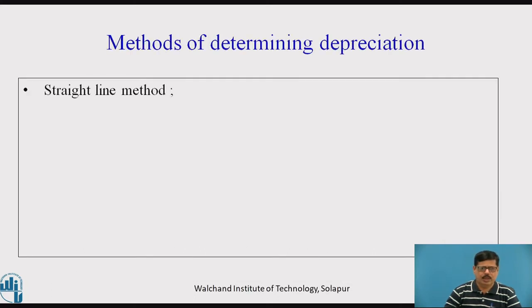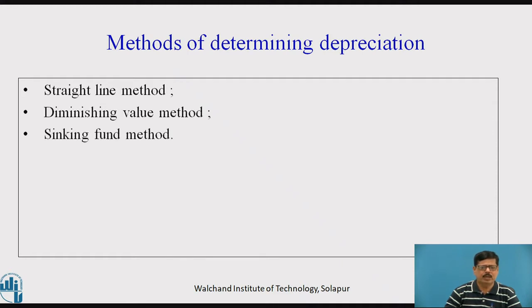Let us see the various methods of determining depreciation. The first and most simple method is the straight line method, the second method is the diminishing value method, and the third method is the sinking fund method.